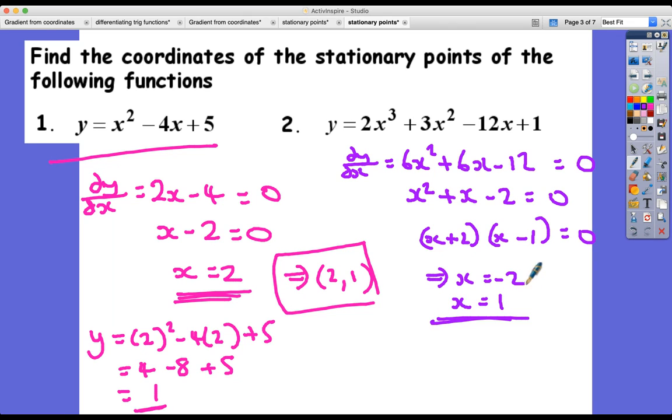And now I just need to put those individually back into the original function. So the first one is, and let's do it properly this time: (-2)³ + 3 × (-2)² - 12 × (-2) + 1. Let's see if we can do that: -16 + 12 + 24, so -16 + 12 + 24 + 1, I get that to be 21.